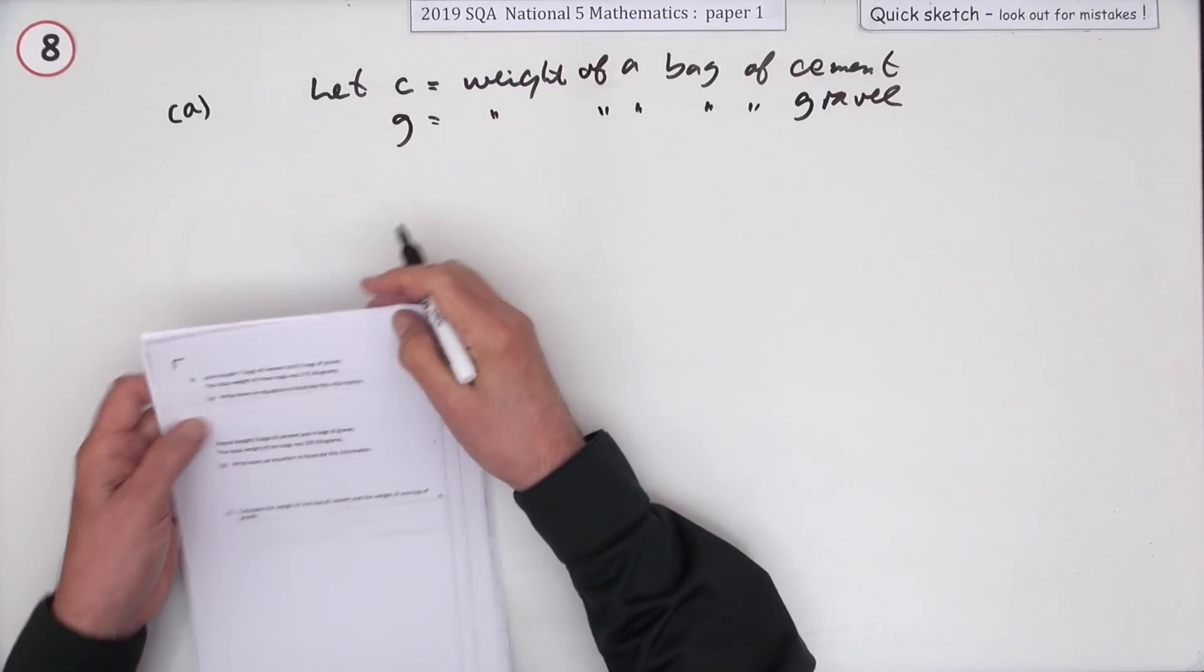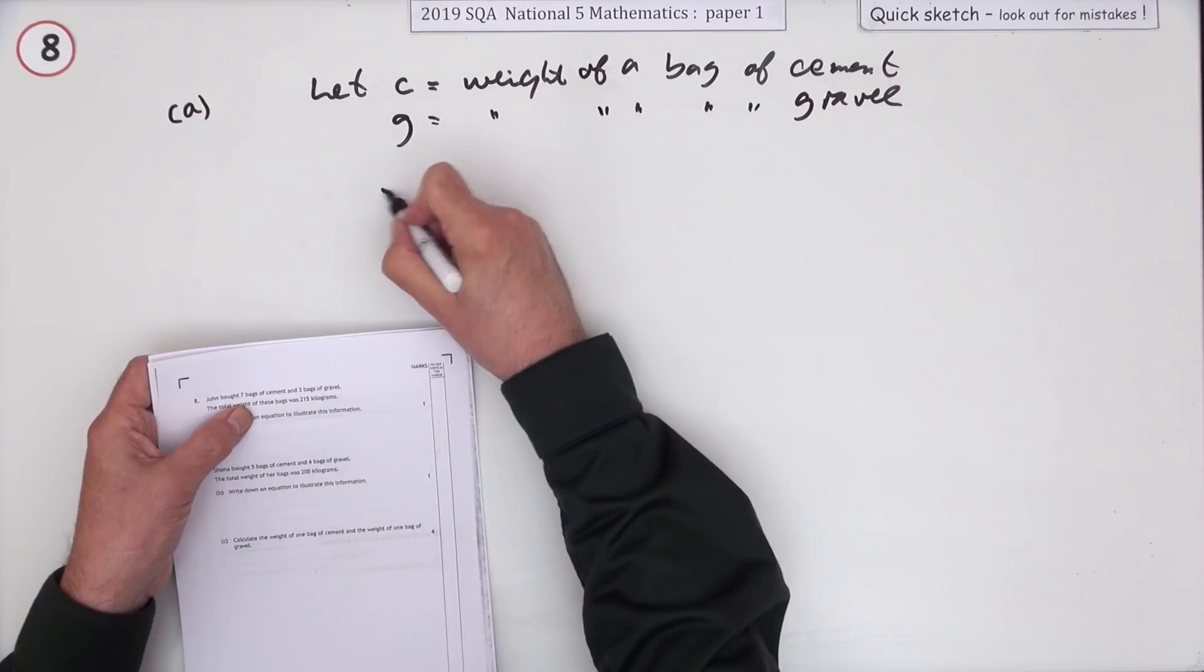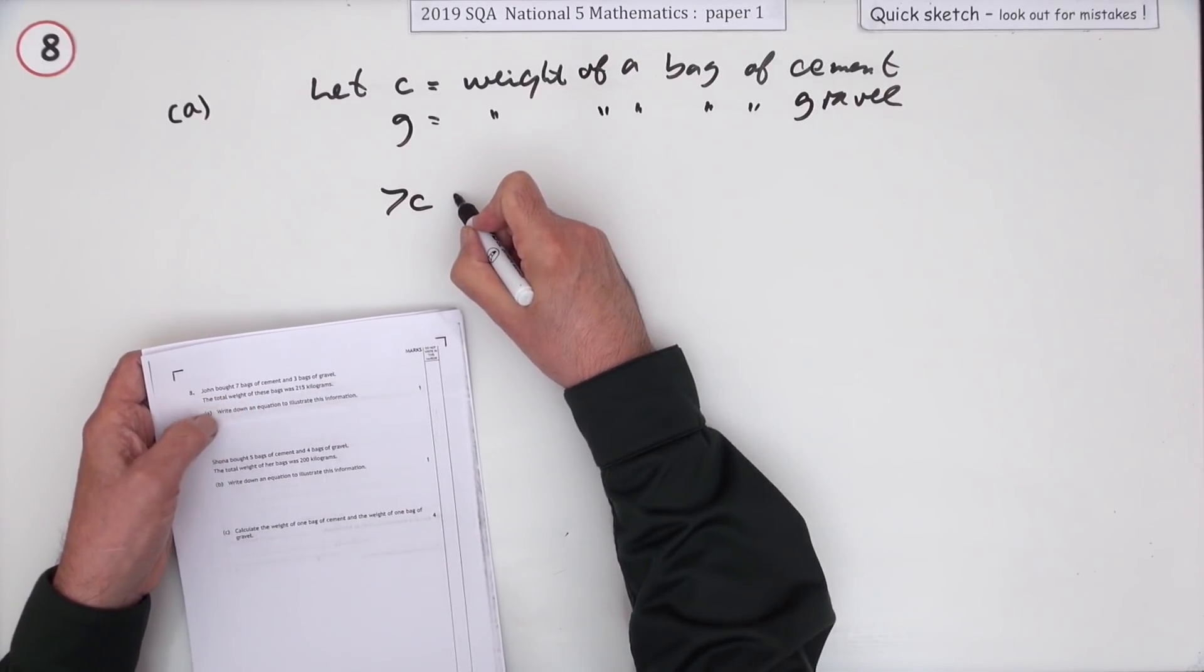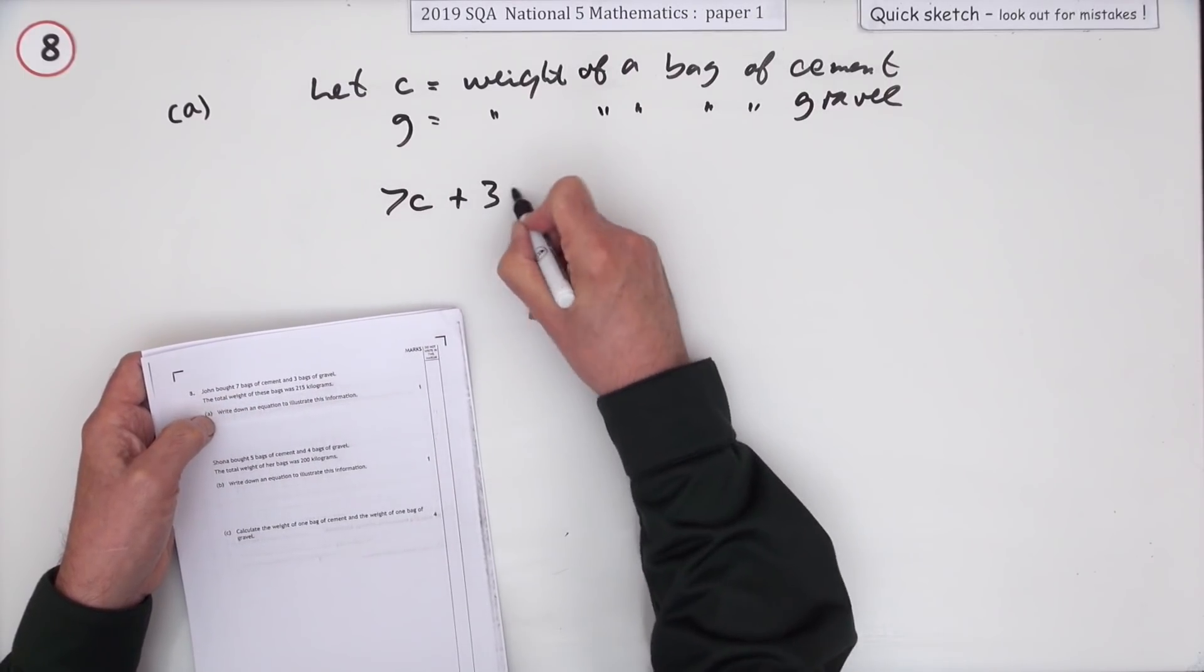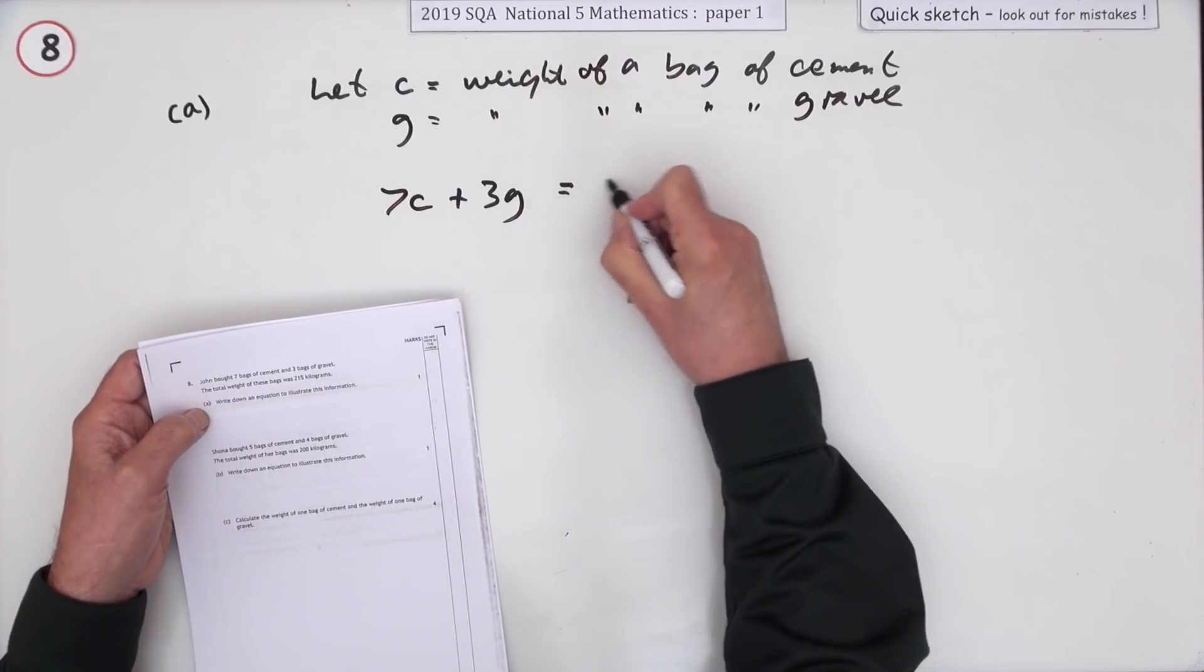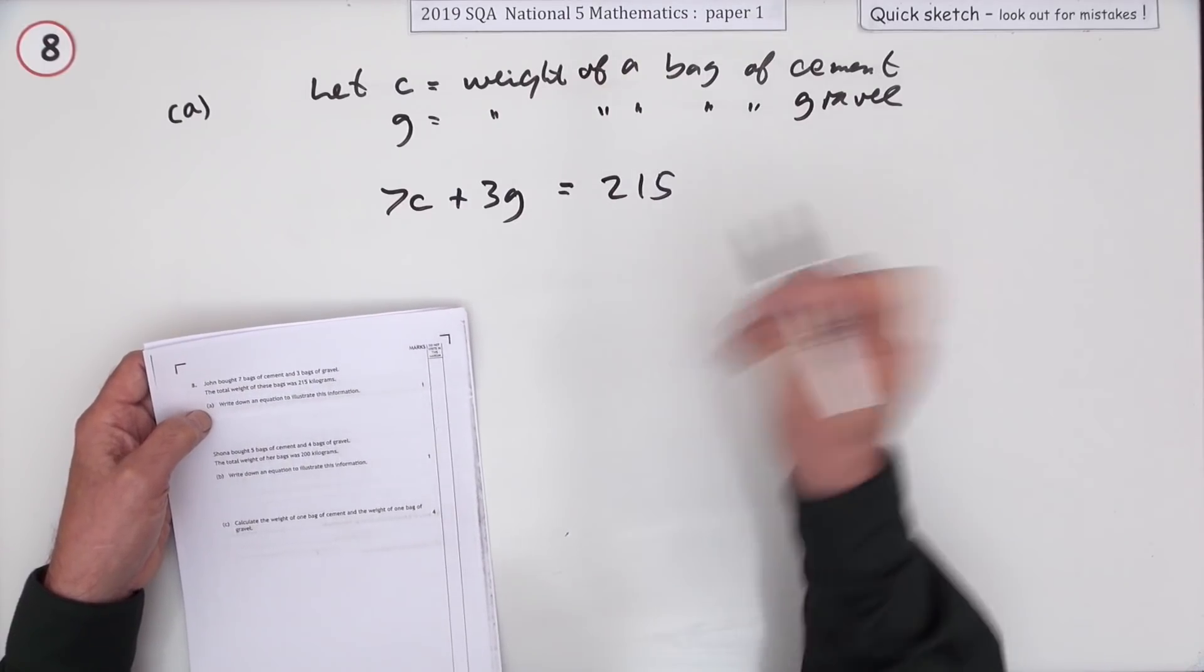For part A, what was there? Seven bags of cement, that'll be 7C, and three bags of gravel, 3G, and that comes to 215. So there's one equation.